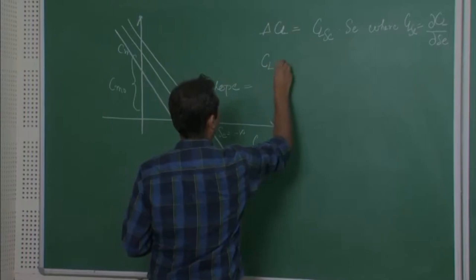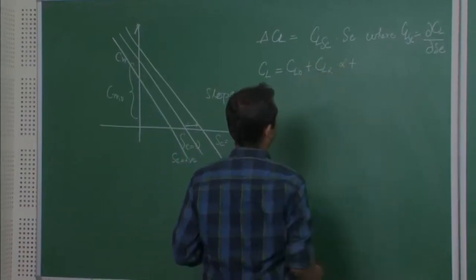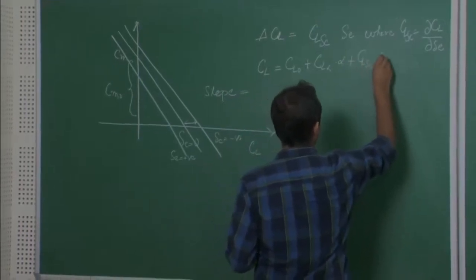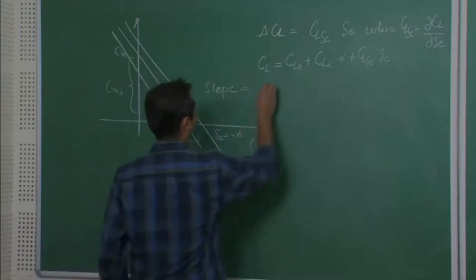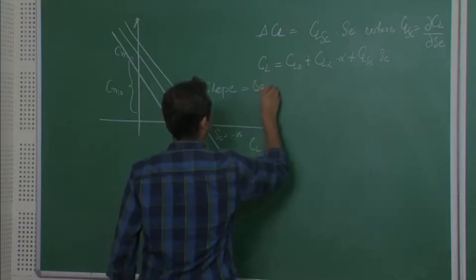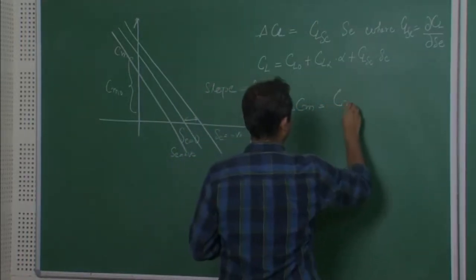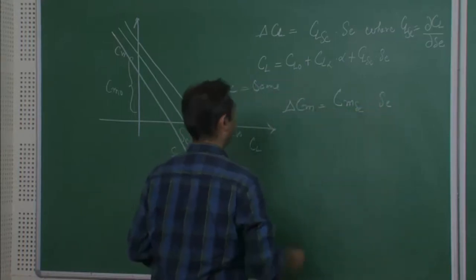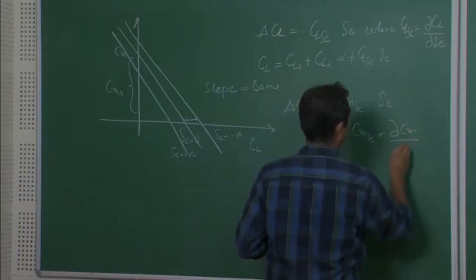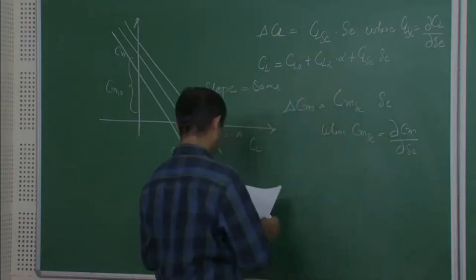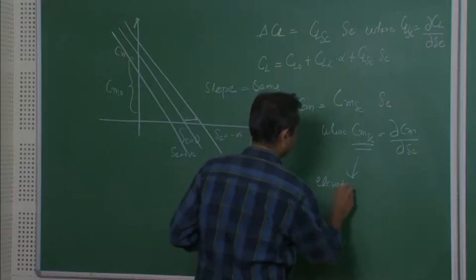The lift coefficient includes CL = CL_α × α, with a new term CL_δE × δE added. Similarly, due to elevator deflection the pitching moment also changes — the slope remains the same. The change in pitching moment coefficient is ΔCM = CM_δE × δE, where CM_δE is the change in pitching moment coefficient per unit elevator deflection.